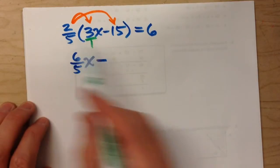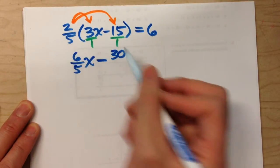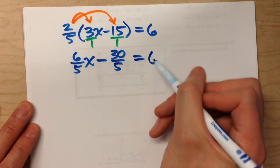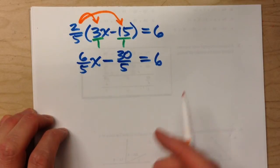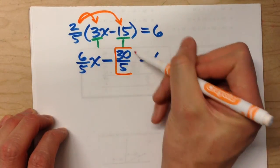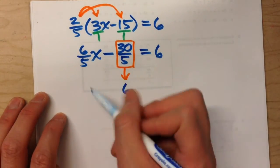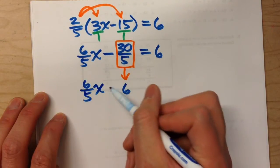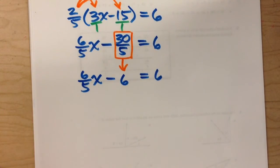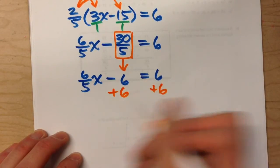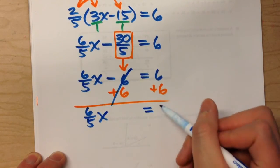Minus: we've got another fraction times a whole number, so put 15 over 1, top times top is 30, bottom times bottom is 5 — giving 30 fifths. Drop down equals 6. Before solving, we can simplify: 30 divided by 5 is 6, so 30 fifths becomes 6. Now we have 6 fifths times x minus 6 equals 6. Add 6 to both sides — those undo each other — and 6 fifths times x equals 12.